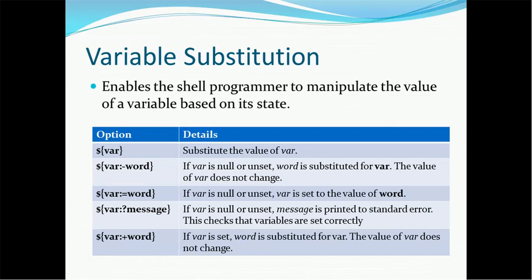The fourth option is `${var:?message}`. So far we've seen colon-hyphen and colon-equals; now we have colon-question mark. This option means if var is null or unset, the message is printed to standard error. This checks that variables are set correctly, so I would say this option is useful for error handling in your program — error handling can be achieved using this option.